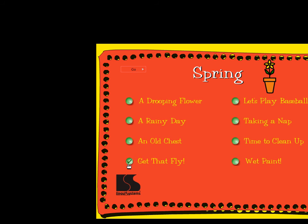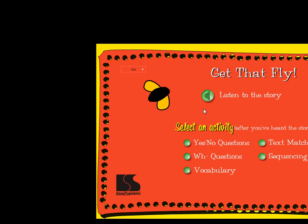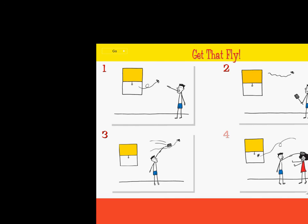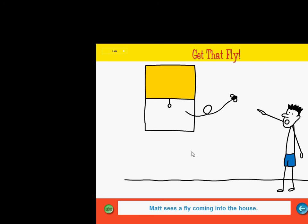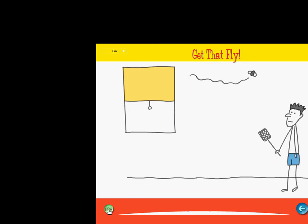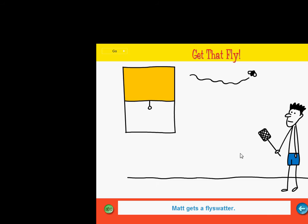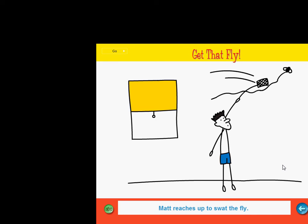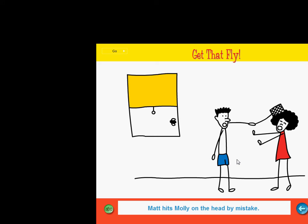Pick a spring story. OK. Get That Fly. Click on the big button to listen to the story. Click on one of the small buttons to do an activity. Here we go. This story is called Get That Fly. It has four parts. Click on the arrow to listen to the story. The window is open. Look. Matt sees a fly coming into the house. Flies can be a bother. Matt gets a fly swatter. He sees the fly high up in the air. Matt stands on his toes. He reaches up to swat the fly. Oh, no. Matt misses the fly. He hits Molly on the head by mistake. Poor Molly. Goodbye, fly. Get that fly.